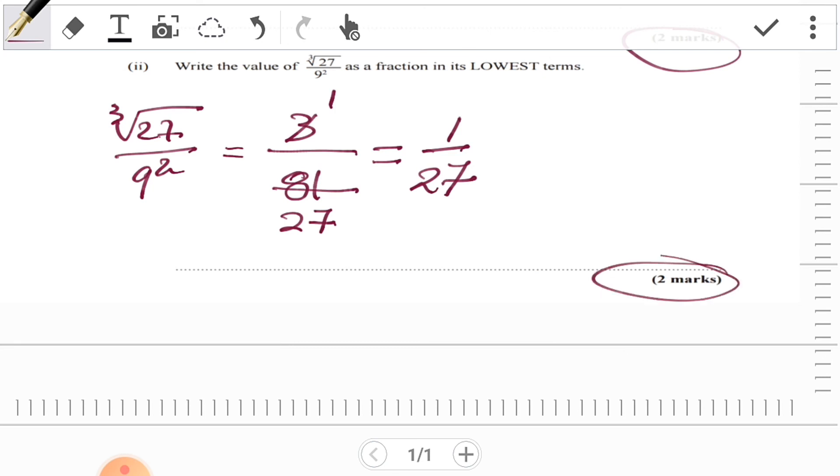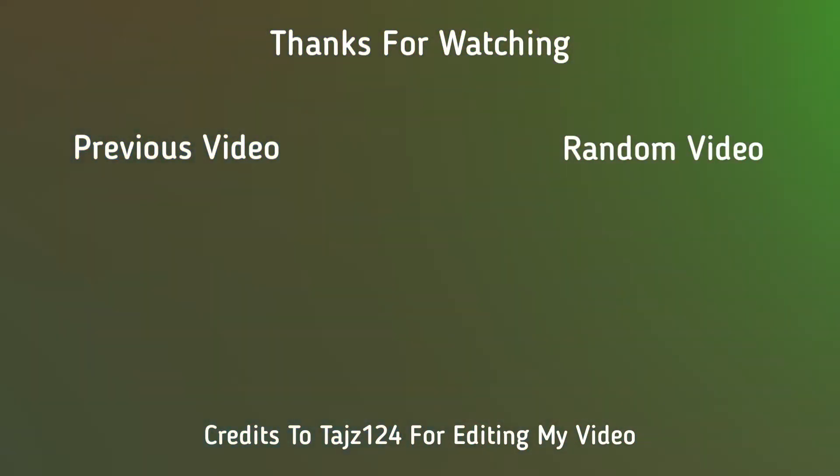As I said, you could use your calculator to get the cube root of 27 (which is 3), square 9 to get 81, and then reduce it to its lowest form. Thank you for watching, subscribe, like, and share.